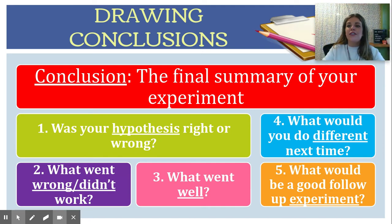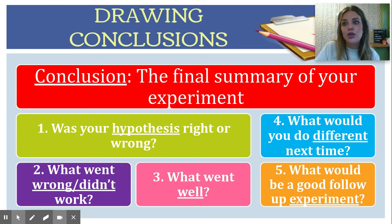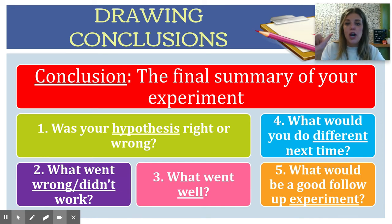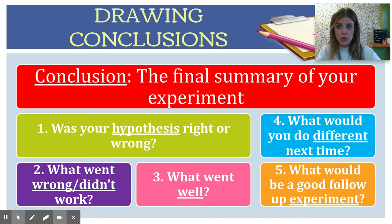Your conclusion is the final summary of your experiment. A lot of times when scientists are reading scientific journals, they will skip to the conclusion to see what happened and to see if they are interested enough to actually read the whole journal. Things you want to include in your conclusion: say if your hypothesis was wrong or right, say what went wrong and didn't work — it's important to be transparent with errors — and also explain what went well in the experiment.